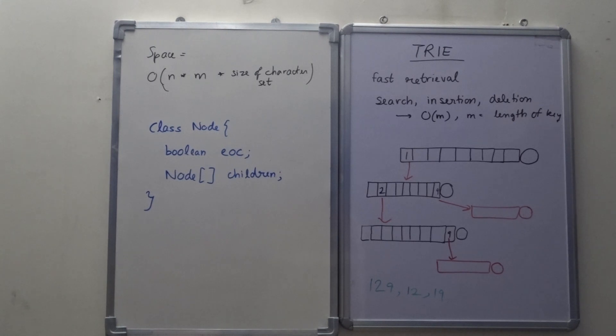And typically the keys are of constant and small length. So we can say that the updation time in Trie is big O(1).